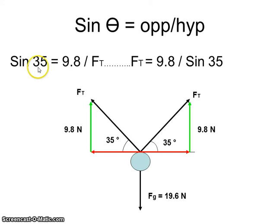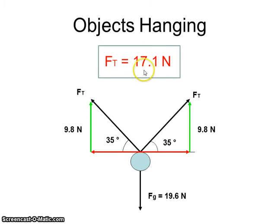So the sine of the angle is the opposite over the hypotenuse. Solve for the hypotenuse. Get 17.1 newtons. So that's the tension in the string, 17.1 newtons.